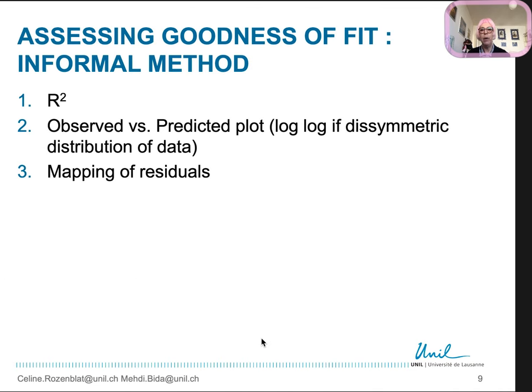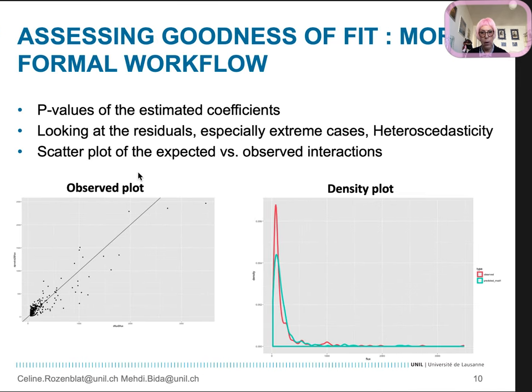Like a classical regression, we can find R squared and calculate predicted values to map the residuals. The residuals permit to assess the goodness of fit and see if there is heteroscedasticity of the residuals, meaning that residuals are not distributed randomly. It gives insight on the quality of the adjustment of the model. Observed versus expected plots or compared densities plots may help to explore the residuals.